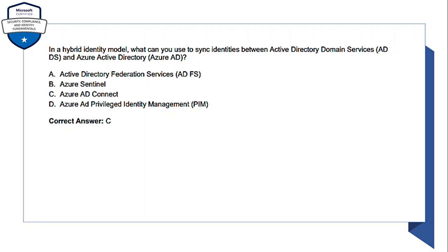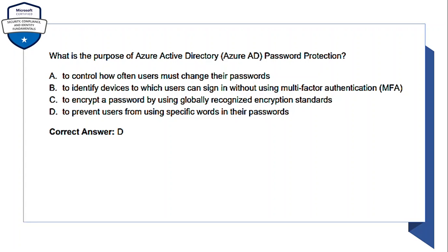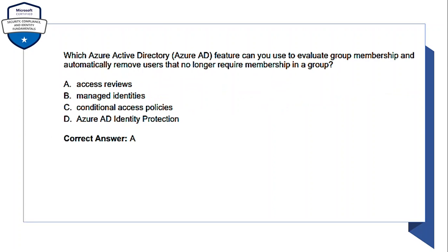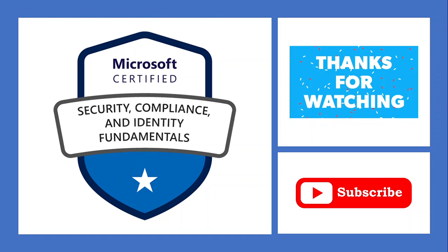The answer is C — Azure AD Connect. 'What is the purpose of Azure Active Directory (Azure AD) Password Protection?' The options are: A) control how often users must change their password; B) identify devices to which a user can sign in without MFA; C) encrypt a password using globally recognized encryption standards; D) prevent users from using specific words in their password. The correct answer is D. Next: 'Which Azure AD feature can you use to evaluate group membership and automatically remove users that no longer require membership in a group?' The correct answer is A — Access Reviews.